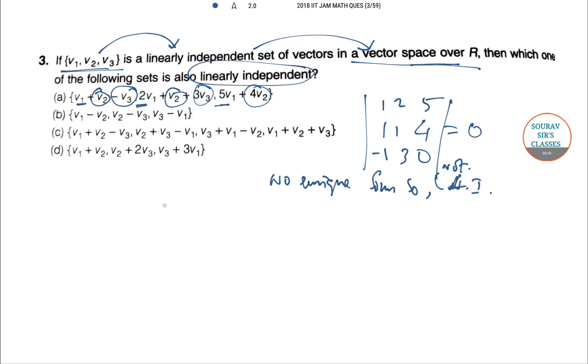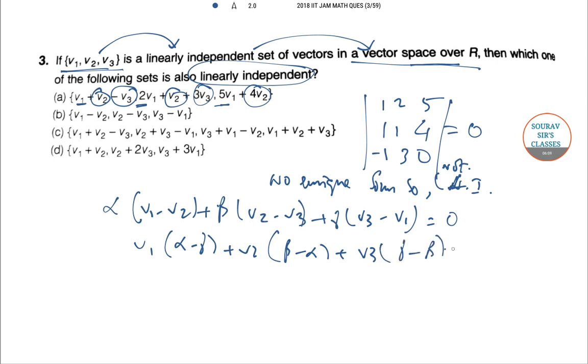Second one is v_1 - v_2, v_2 - v_3, v_3 - v_1. If we write α(v_1 - v_2) + β(v_2 - v_3) + γ(v_3 - v_1) = 0, we get v_1(α - γ) + v_2(β - α) + v_3(γ - β) = 0. So α - γ = β - α = γ - β = 0, as v_1, v_2, v_3 are LI. So α = β = γ. Thus the equation does not have a unique solution, so they are not linearly independent.